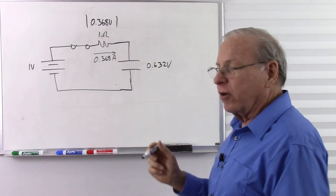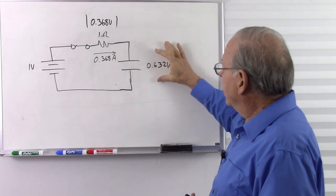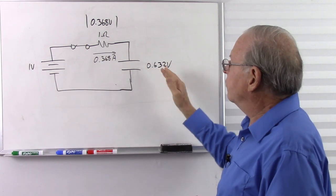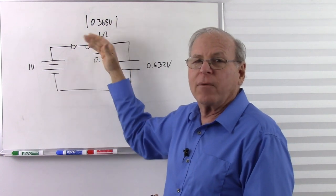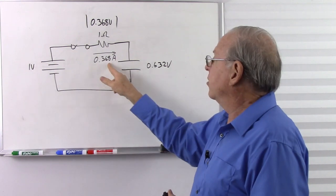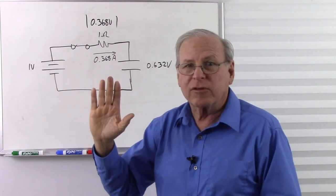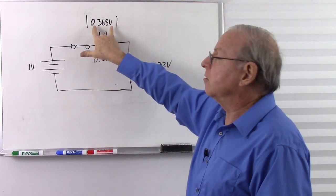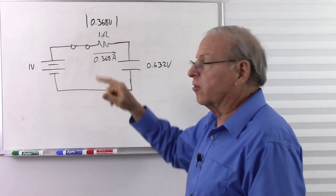When I first flipped the switch I had 1 amp, but now with 0.632 volts across the capacitor pushing back, I no longer have as much current. My current has dropped down to 36.8% of the original 1 amp. As we go through more time constants, the capacitor voltage goes up, the voltage across the resistor gets lower, and I get less current — the capacitor is pushing back more and more.